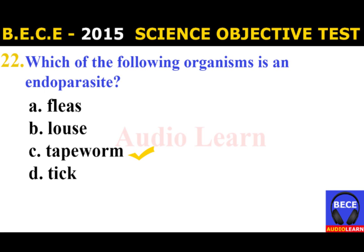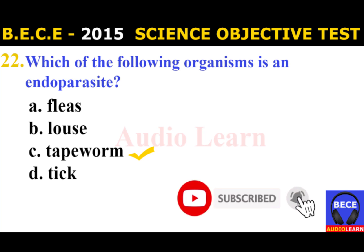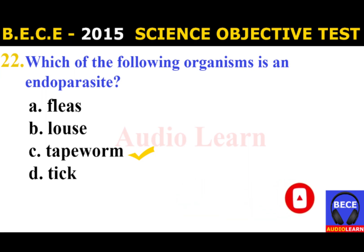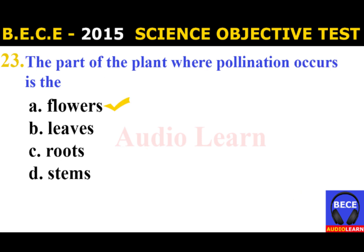Number 22: Which of the following organisms is an endoparasite? A. Flea, B. Louse, C. Tapeworm, D. Tick. The answer is C. Tapeworm. The organism that is an endoparasite is the tapeworm.